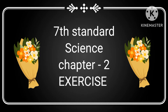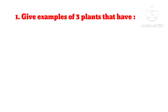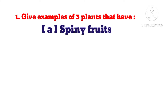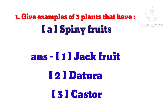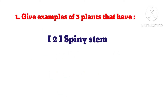7th Standard Science Chapter 2 Exercise 1. Give examples of 3 plants that have spiny fruits. Answer: 1. Jackfruit, 2. Dhatura, 3. Castor.